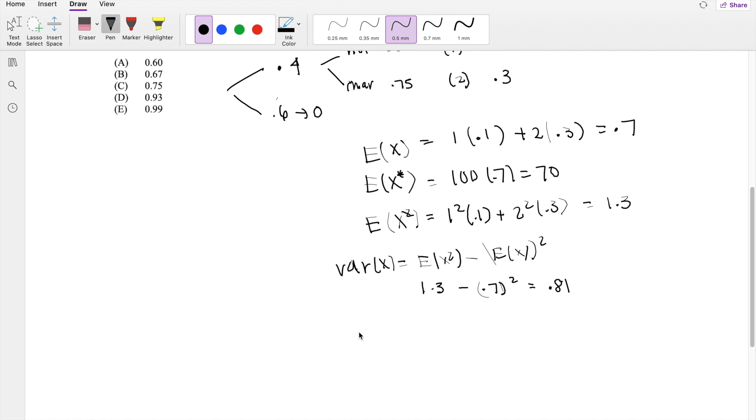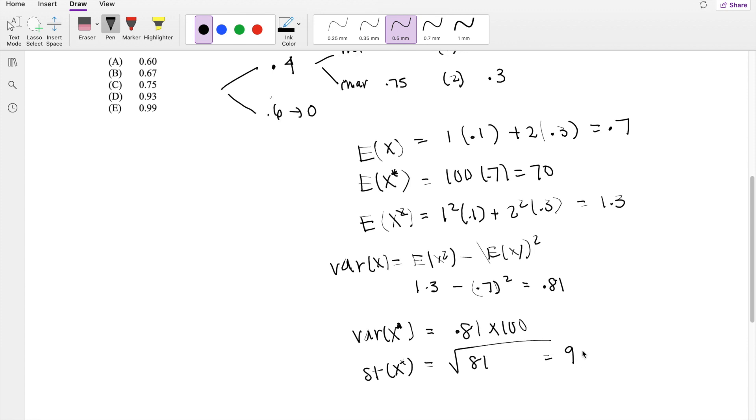If we're looking for variance of X star for 100 people, this equals 0.81 times 100. The standard deviation of X star equals the square root of 0.81 times 100, which equals 9.